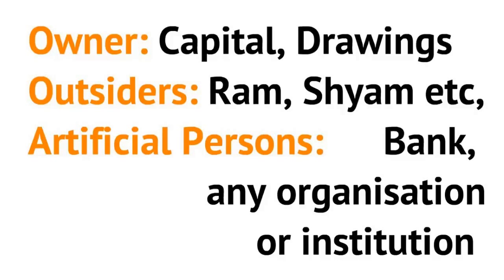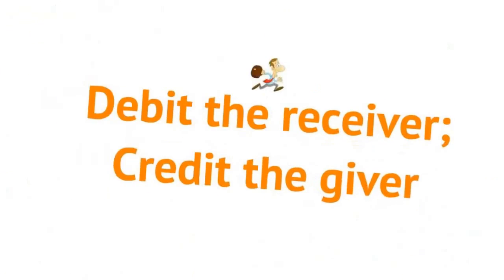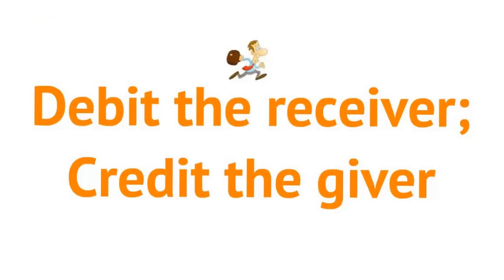Bank, any organization or institution, are the artificial persons. And the rule to record a personal account is: debit the receiver, and credit the giver.